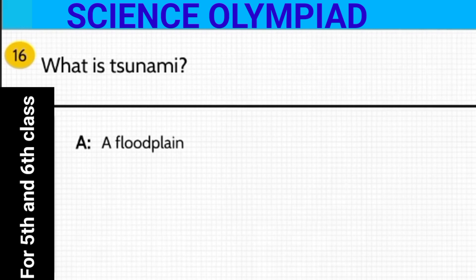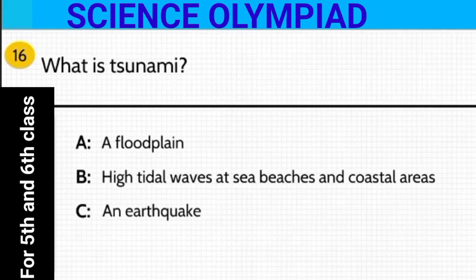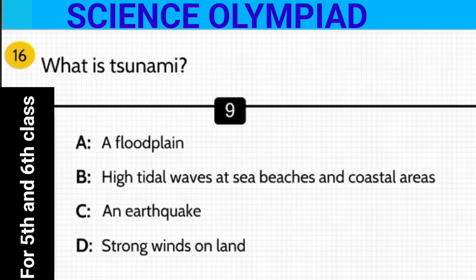What is a tsunami? Is it a flood plain, high tidal waves at sea beaches and coastal areas, an earthquake, or strong winds on land? The answer is option B — high tidal waves at sea beaches and coastal areas. One of the reasons behind a tsunami is sea earthquakes — earthquakes which happen under the sea.